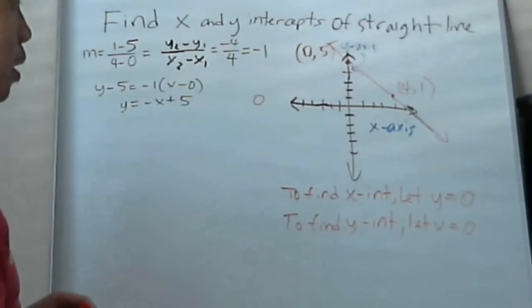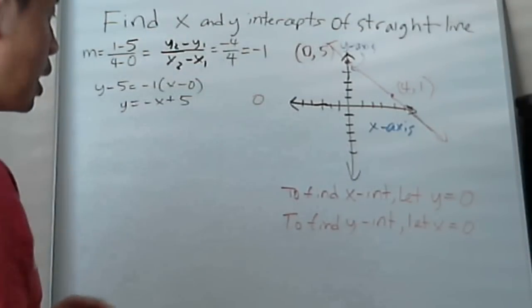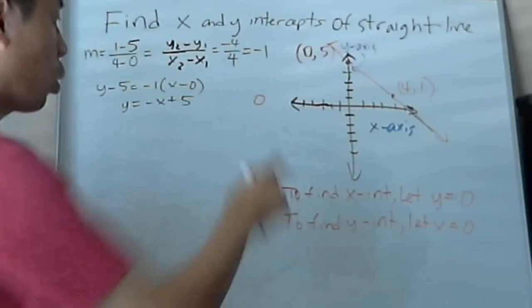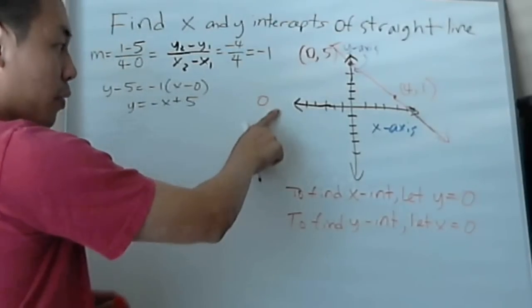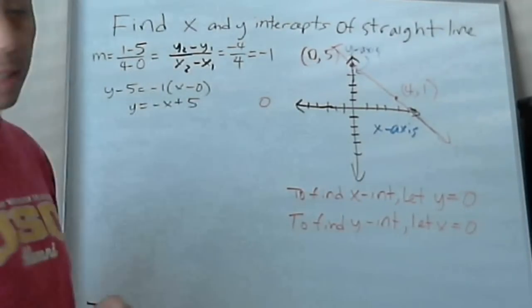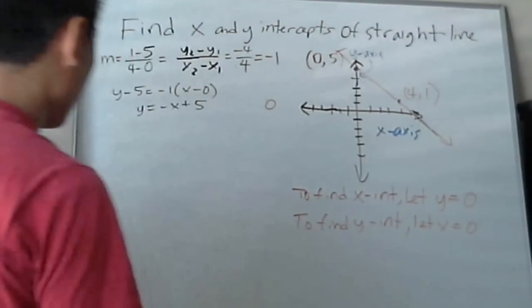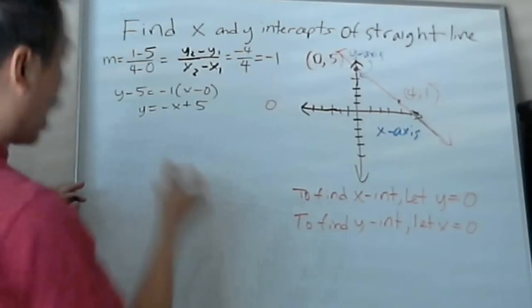Remember the definition of x-intercept is where the graph equation crosses the x-axis. So we let y be 0, you're gonna cross here. So let's do that, let's let y be 0.